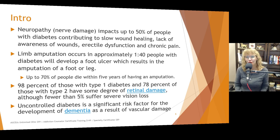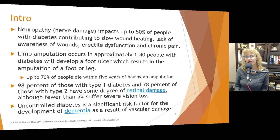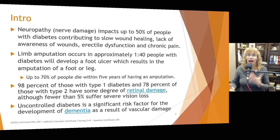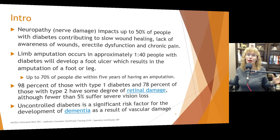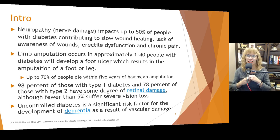Unfortunately, up to 70% of people die within five years of having an amputation — a heartbreaking statistic. They didn't speculate exactly why, except that by the time the disease has progressed to requiring an amputation, the pancreas is pretty much not working anymore. I have a close friend who unfortunately had an amputation two years ago, and this was a devastating statistic for me to read.